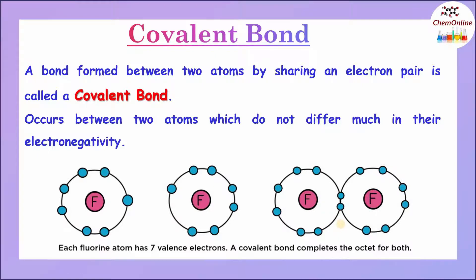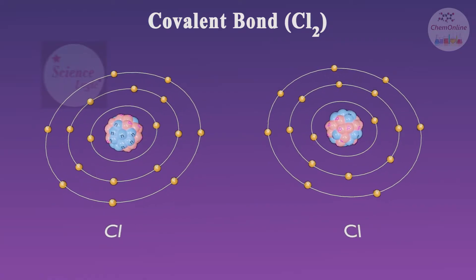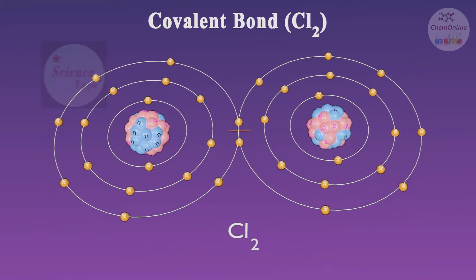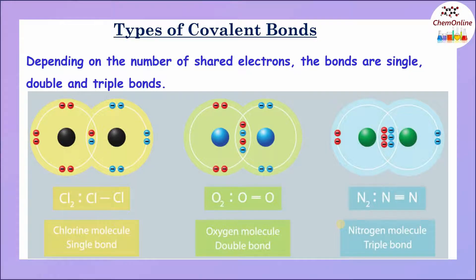Now, let us see an animation on the formation of a covalent bond between two fluorine atoms. Depending on the number of electron pairs shared, there are different types of covalent bonds like single bond, double bond, triple bond, etc. For example, in the chlorine molecule, just one electron pair is shared and it forms a single bond, Cl–Cl.